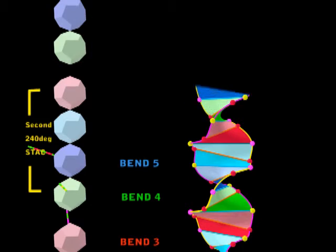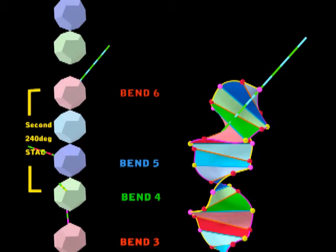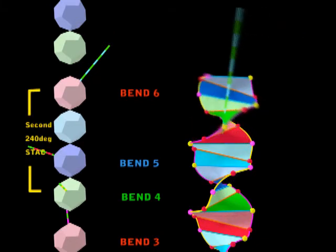We'll give it a bit of rotation, and then we'll go up to the red and give it a bend on the red again. So now we've finished the second 240 degrees.